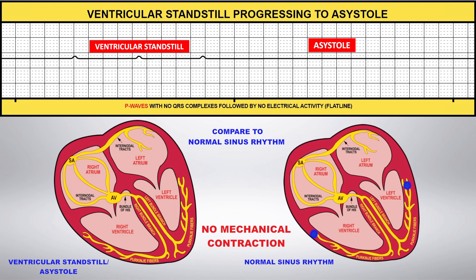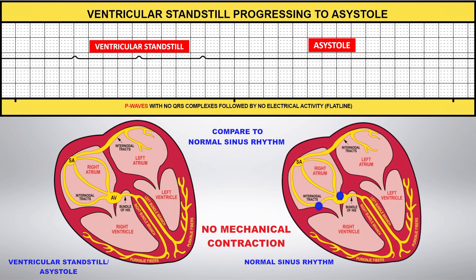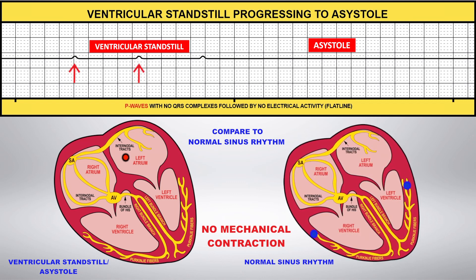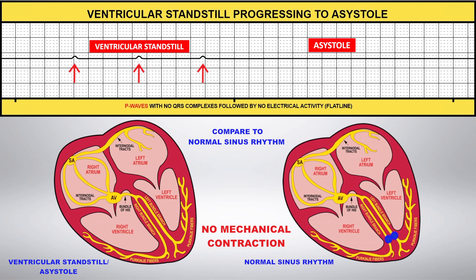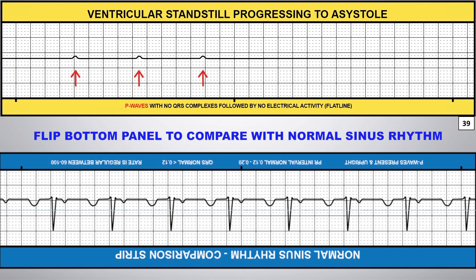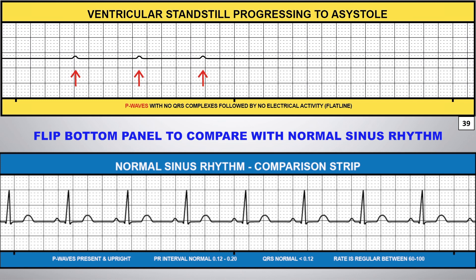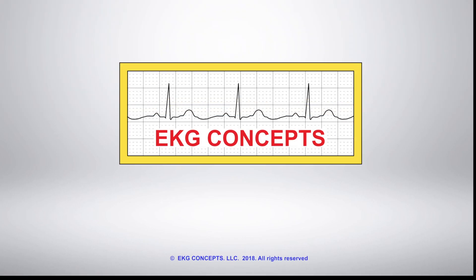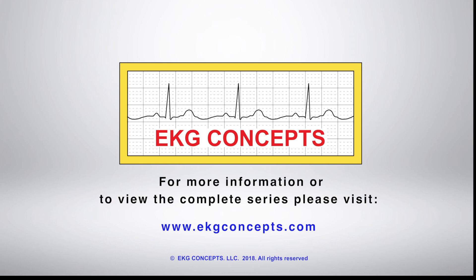In asystole, the patient has no pulse. Always confirm asystole with at least two leads. You can flip the comparison strip on the bottom panel to compare this rhythm to normal sinus rhythm. Thank you.